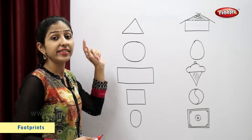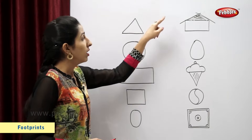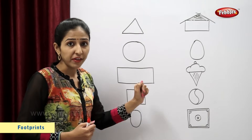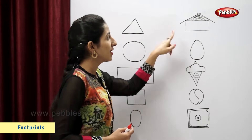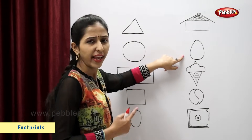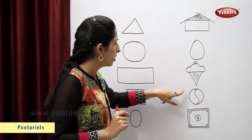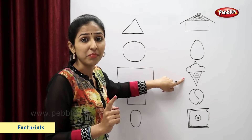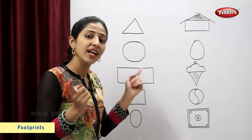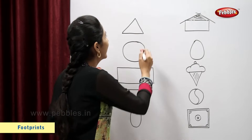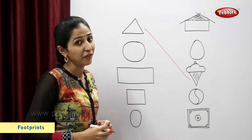This is a triangle. Now, you tell me students, which is the figure similar to the triangle? Egg? No. Ice cream? Ice cream is similar to the triangle. Now, let's match. Very good.